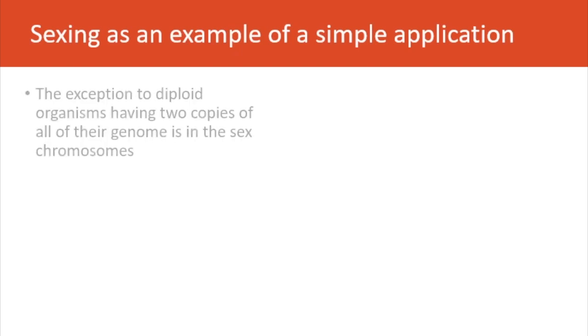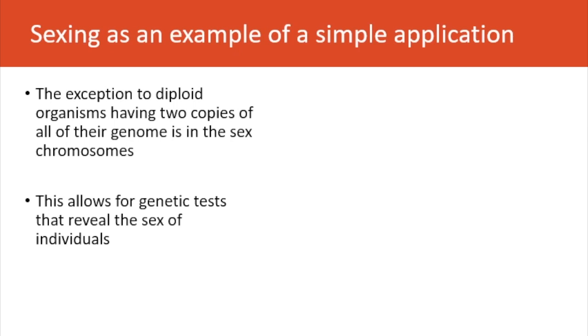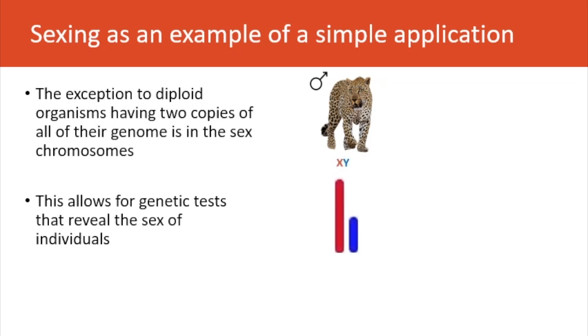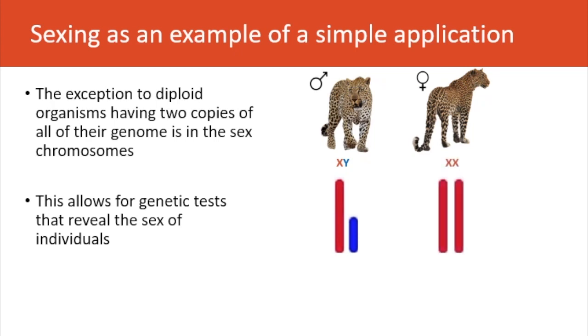As a simple application of genetic markers, we might consider sexing individuals of unknown sex. This works because the exception to diploid organisms having two copies of all of their genome is in the sex chromosomes. A male leopard has an X chromosome and a Y chromosome — the male-specific chromosome — while a female leopard has two X chromosomes, and we can visualize the difference between these two sexes on a gel.